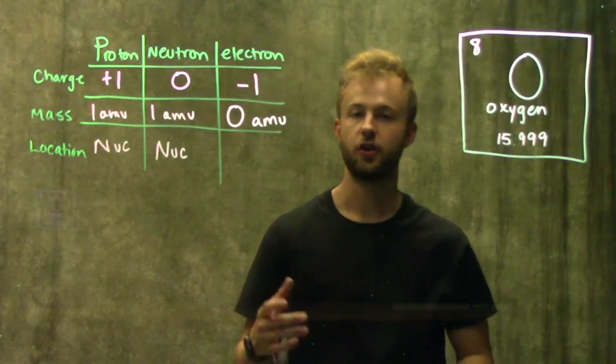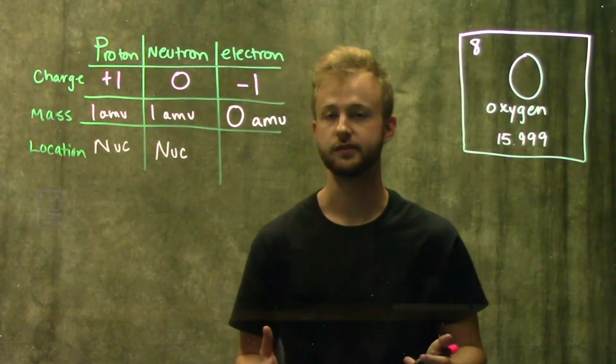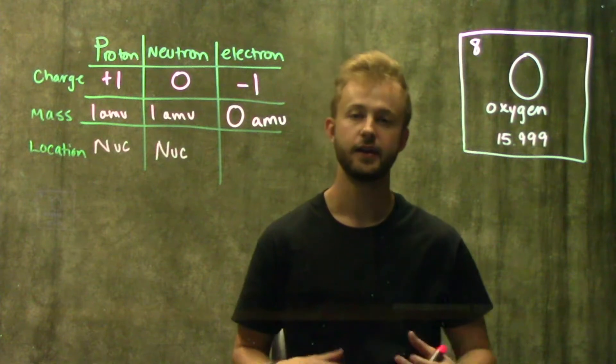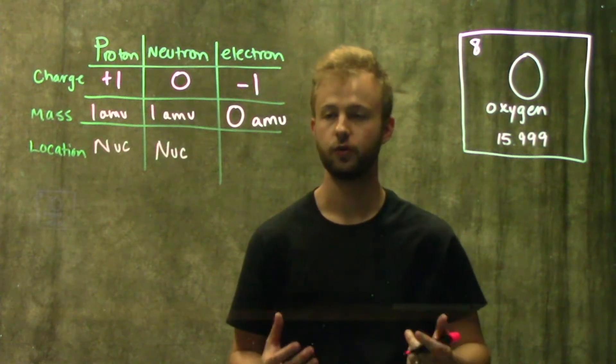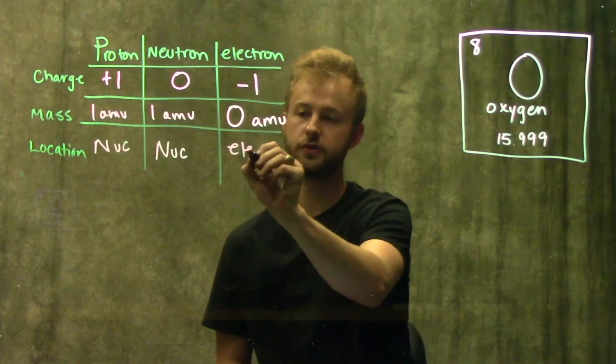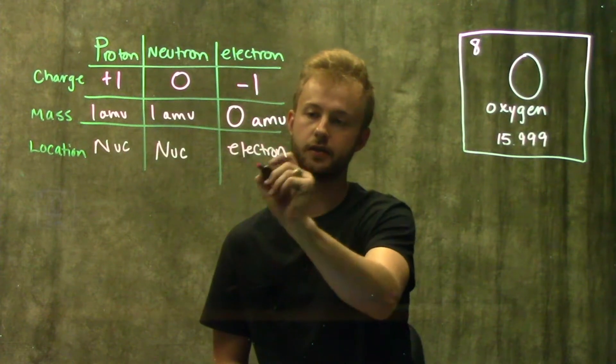So the electrons are actually found outside of the nucleus in something called the electron cloud in individual electron orbitals, which we'll go into more detail in another video.